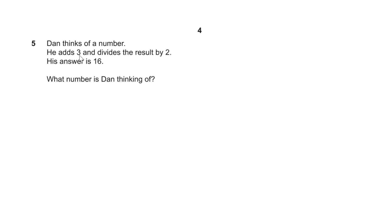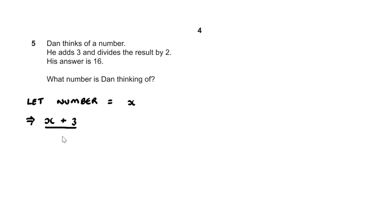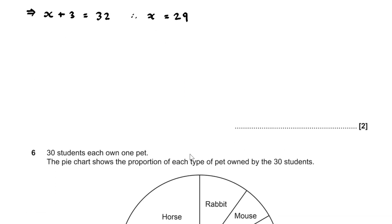Question 5. Dan thinks of a number, adds 3, and divides by 2 to get 16. Letting the number equal x, we have (x + 3) ÷ 2 = 16. Multiplying both sides by 2 gives x + 3 = 32, and subtracting 3 gives x = 29. The number Dan is thinking of is 29.